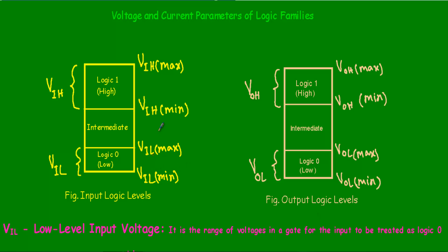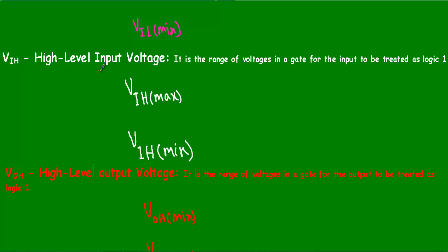When we talk about input logic labels, the voltage range used to indicate logic 1 is denoted as VIH — voltage when input is high. VIH has an upper value VIH max and a minimum value VIH min. The range of voltage for which the input will treat the signal as logic 1 is found by calculating VIH max minus VIH min.